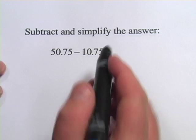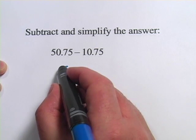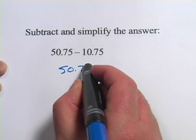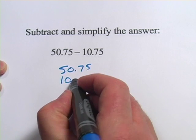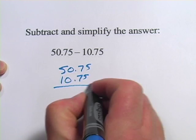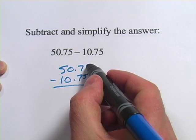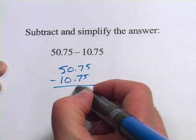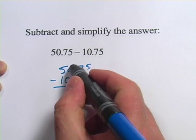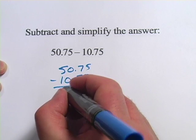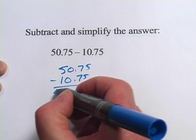And one more here. We're going to subtract and simplify the answer. So when we do subtraction with decimals, I like to line them up like this. So 50.75 minus 10.75. 5 minus 5 is 0. 7 minus 7 is 0. We have our decimal point there. 0 minus 0 is 0. And 5 minus 1 is 4.